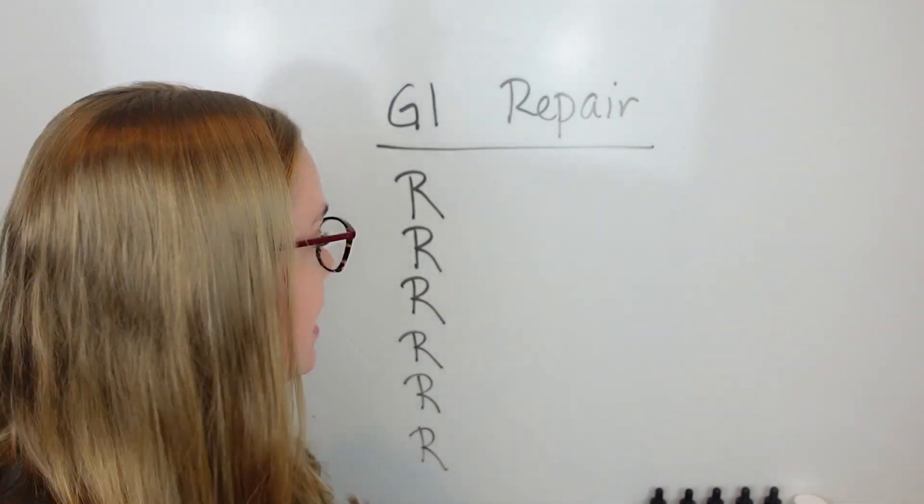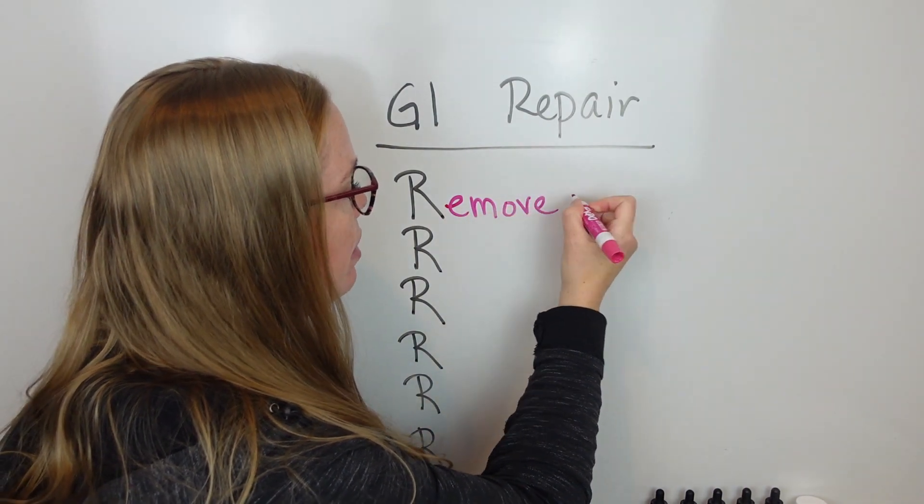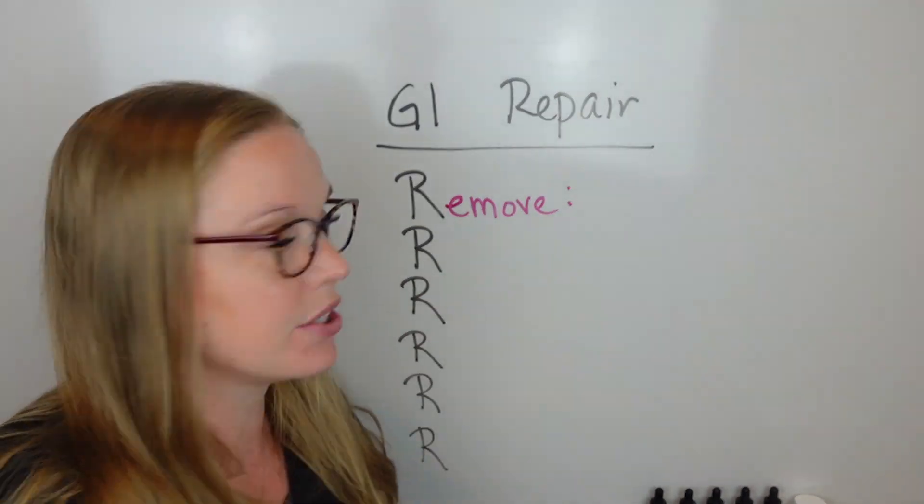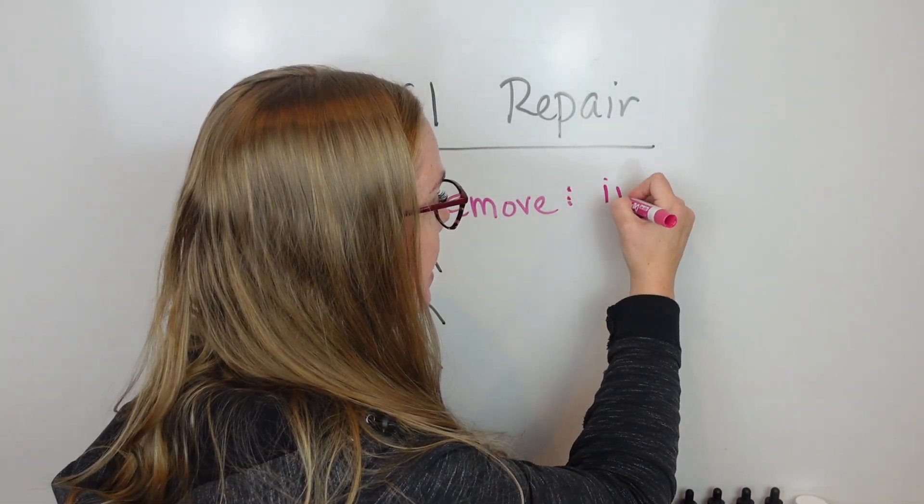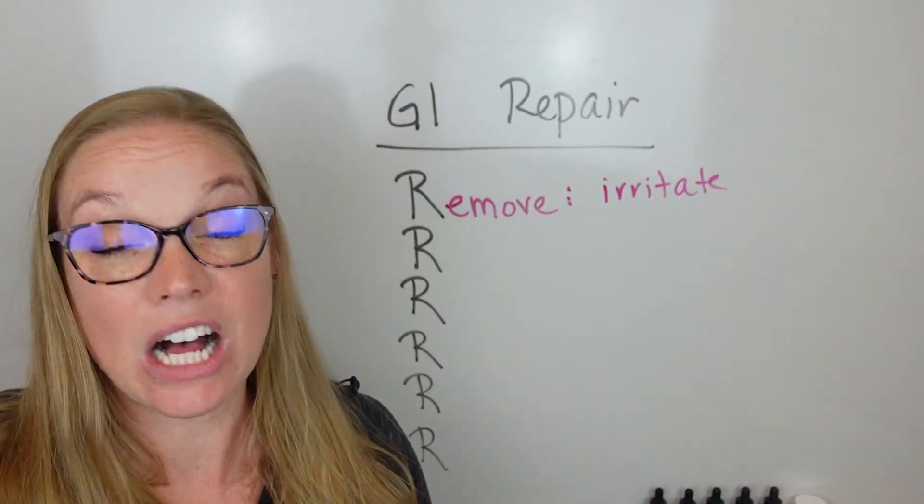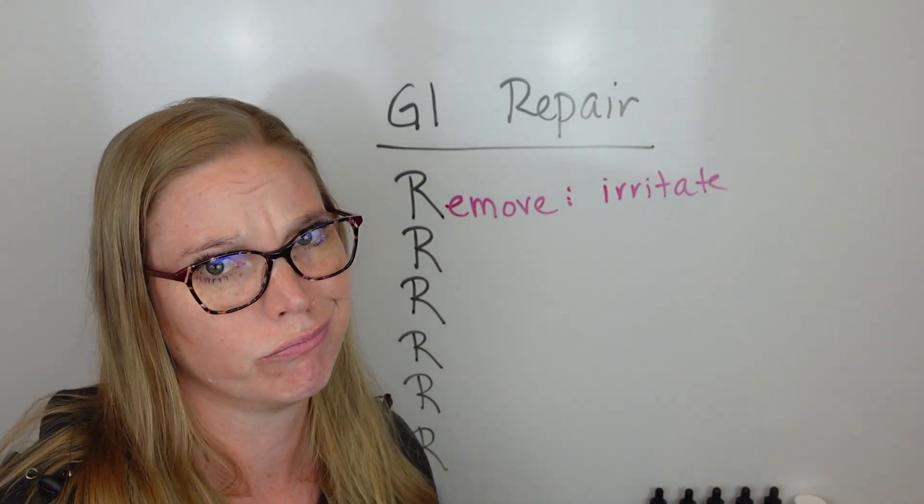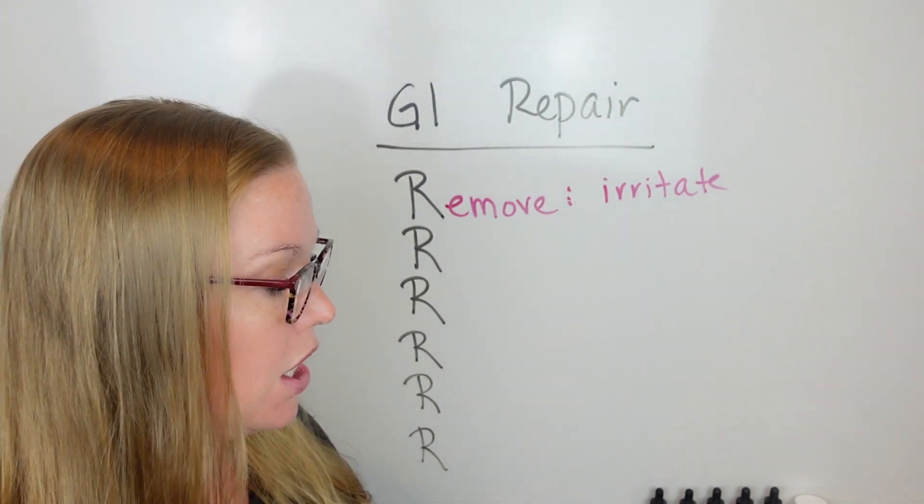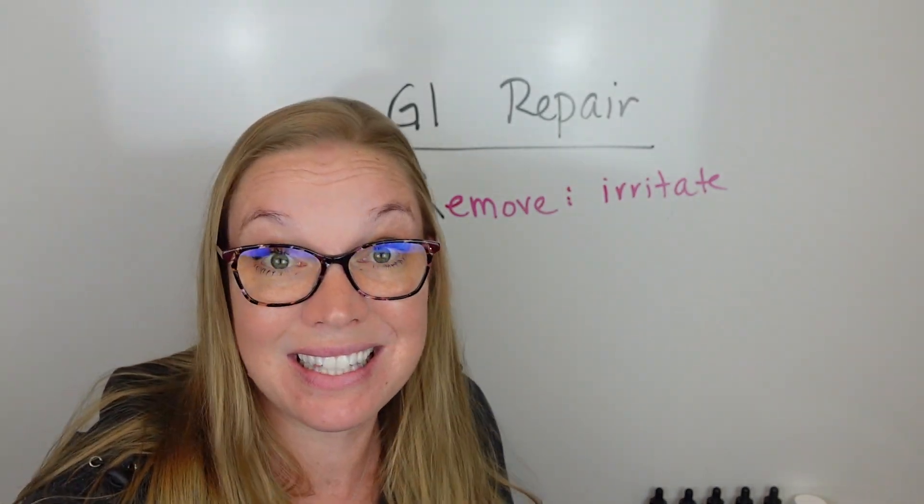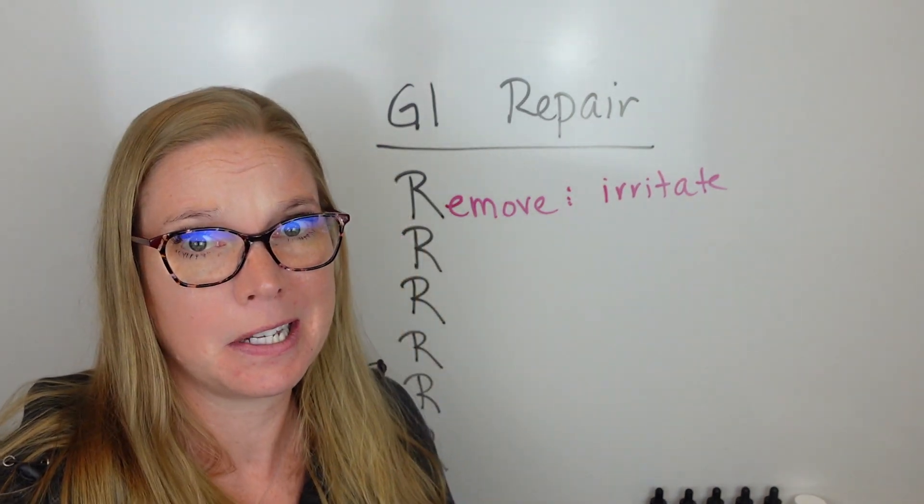The first R is remove. And this is going to be removing anything that irritates your system. You want to remove things like alcohol, inflammatory foods, things like gluten, things like dairy. Remove any other pathogens, any parasites, any yeast issues, any candida infections.